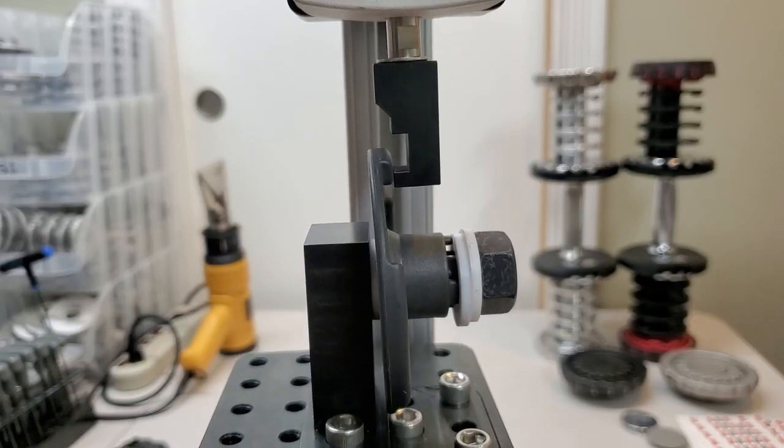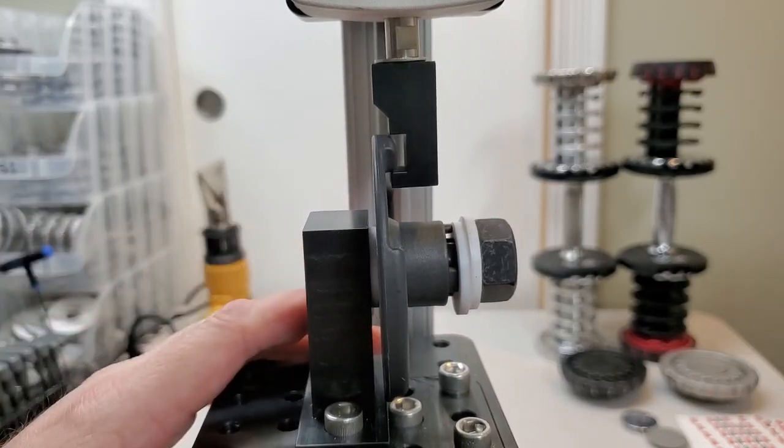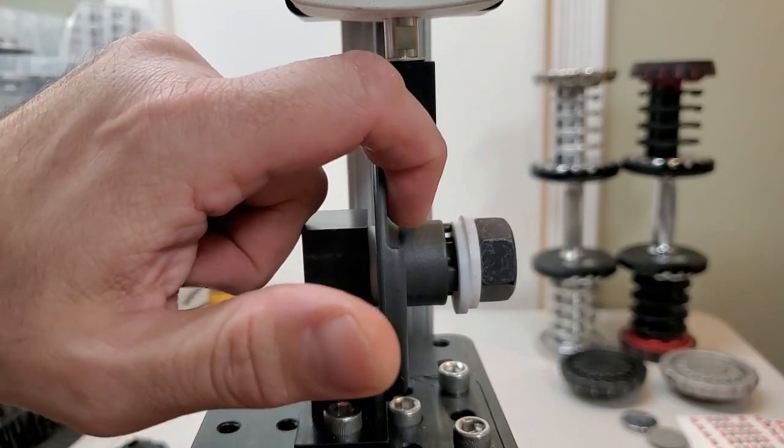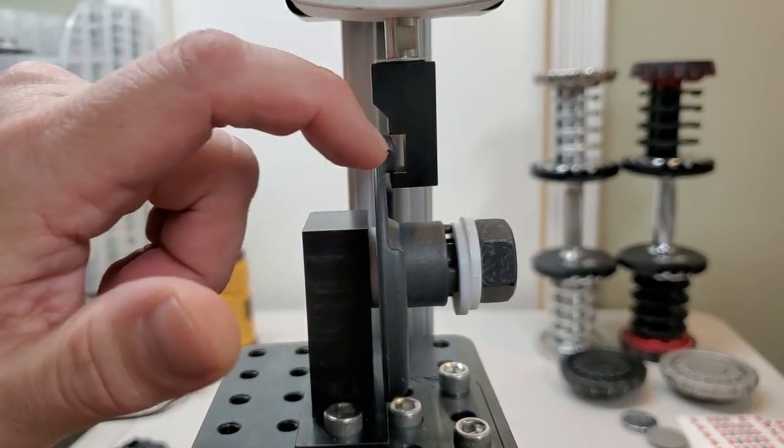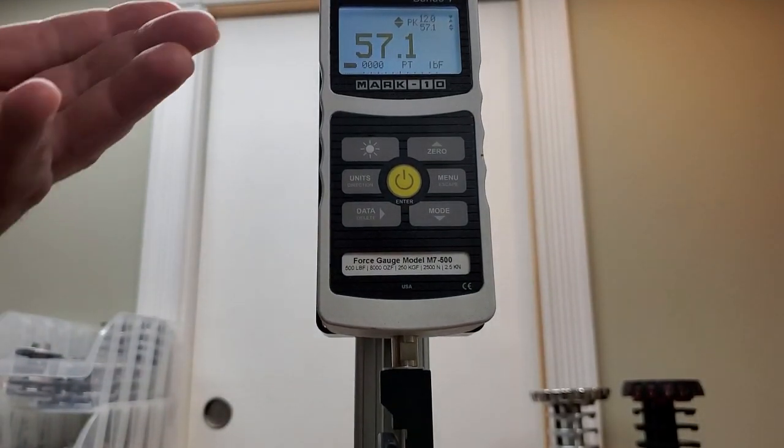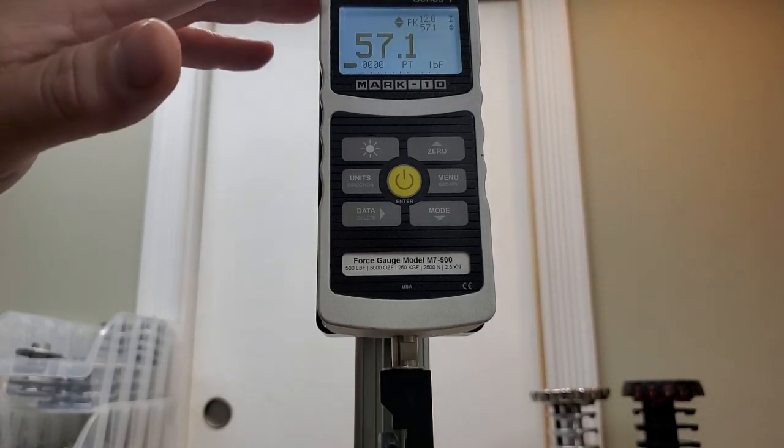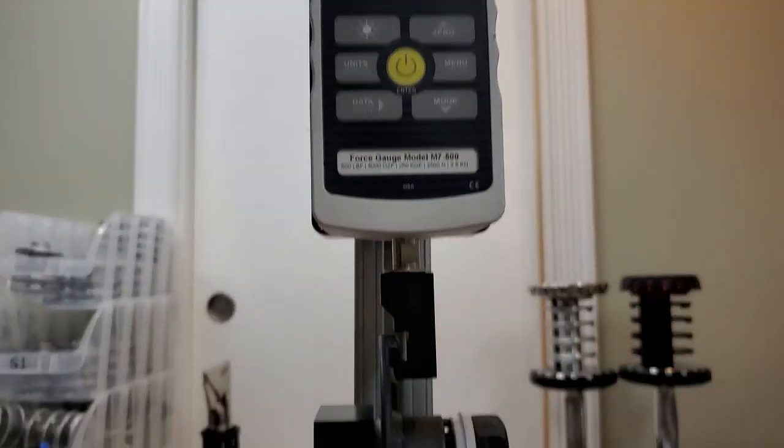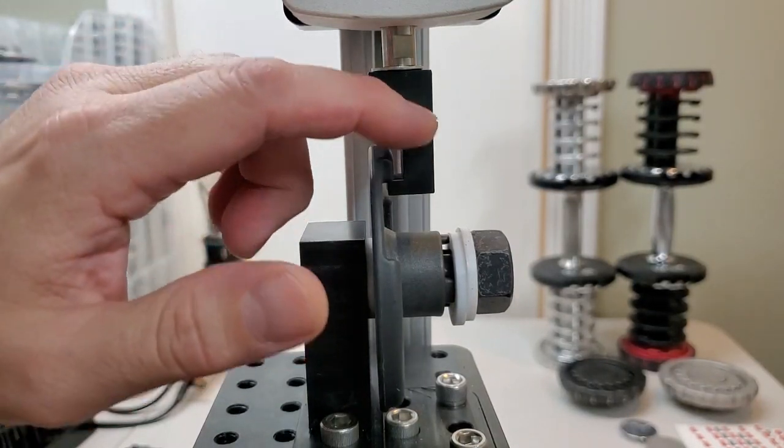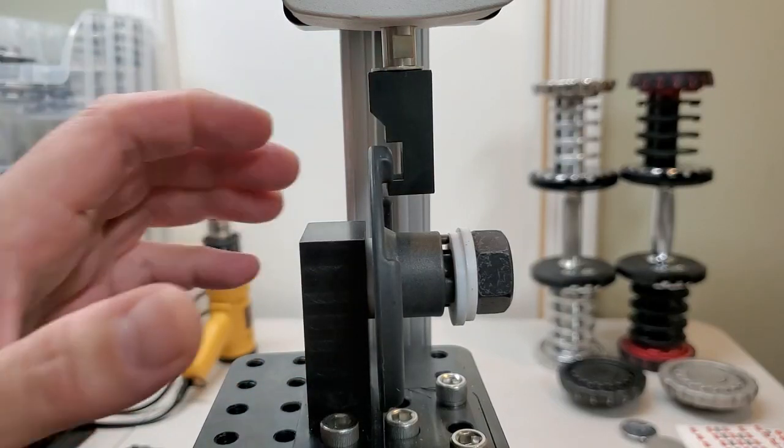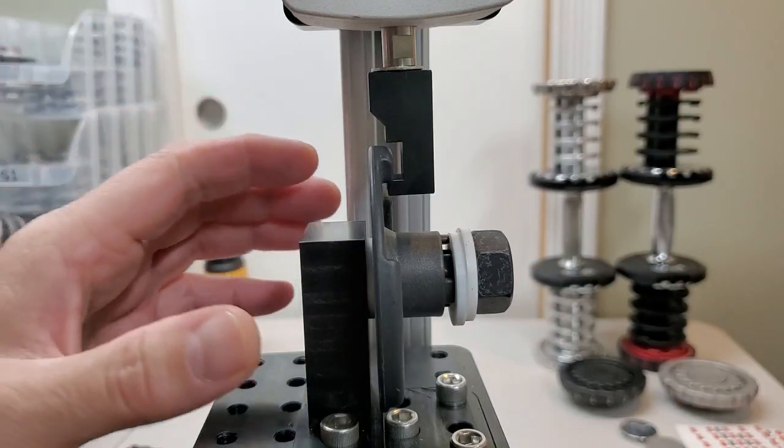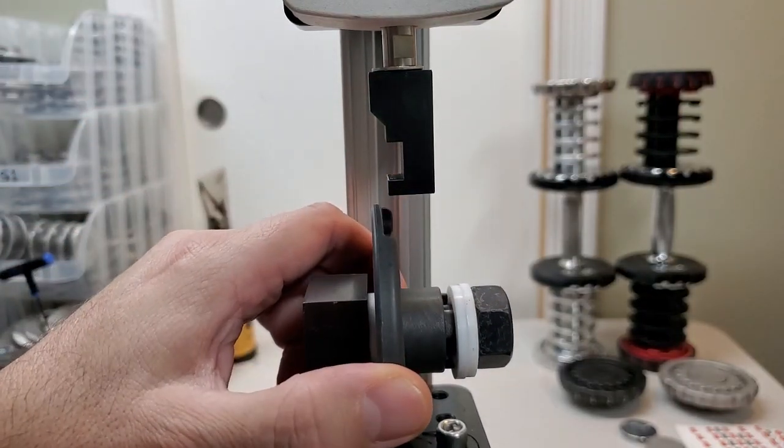So that took almost no force to pop right out as if a weight plate fell out of the dumbbell. So let's take a look at the force. 57.1 pound force is all it took for this to flex enough to come out of the fixture here. That is almost nothing.